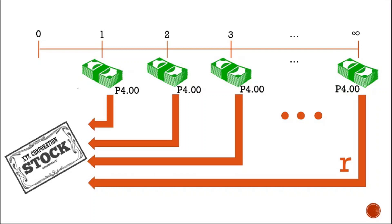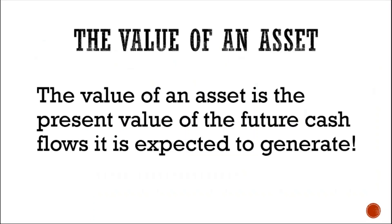We would use the required rate of return to discount it back to year zero — that is 8 percent. As this is a perpetuity, we simply need to divide the annual dividend of 4 pesos by the required rate of return of 8 percent, giving us 50 pesos. The value of this stock is 50 pesos.